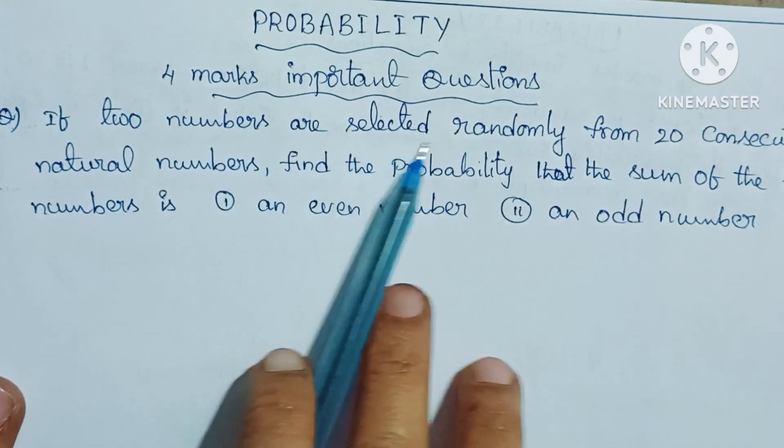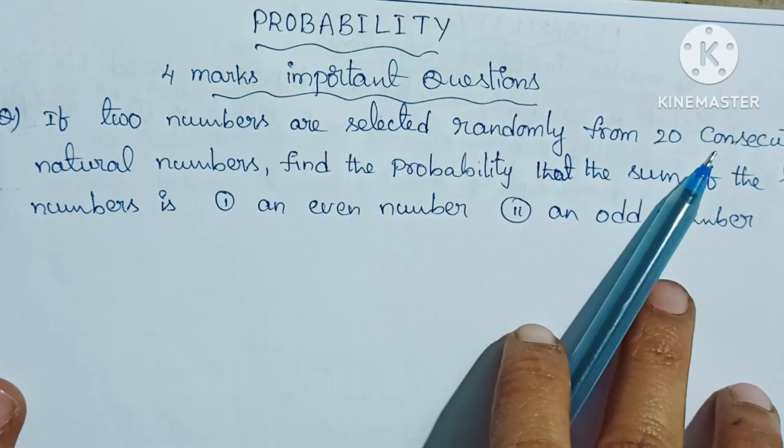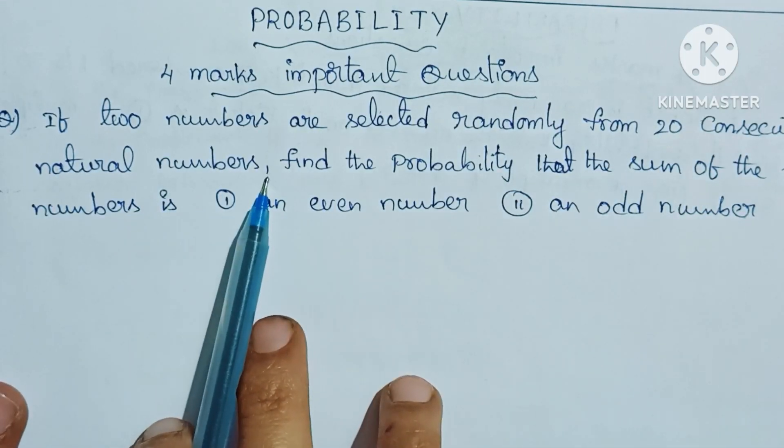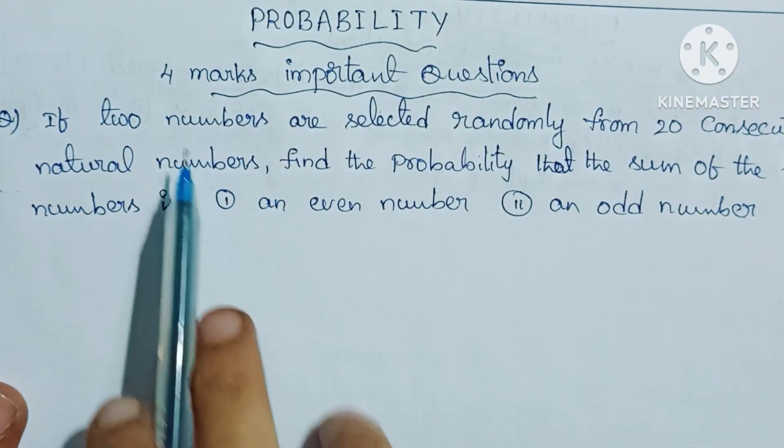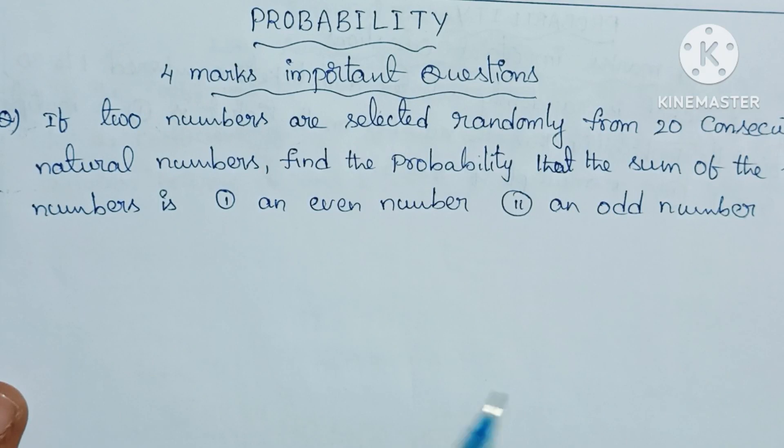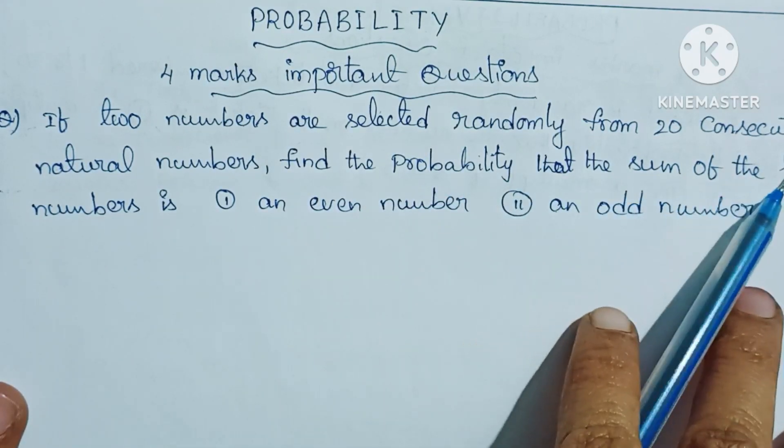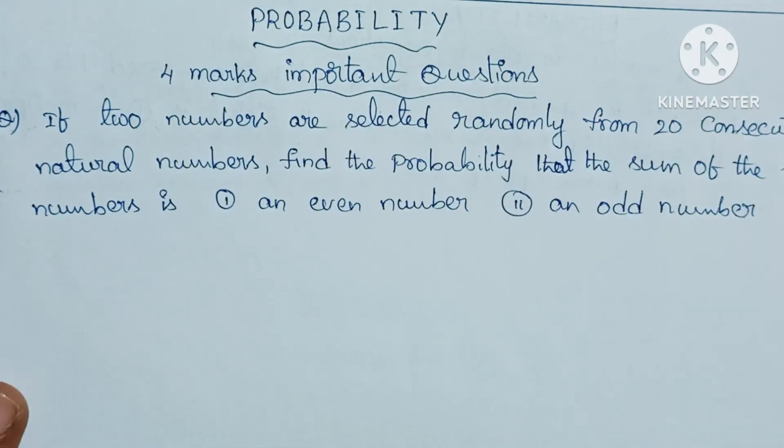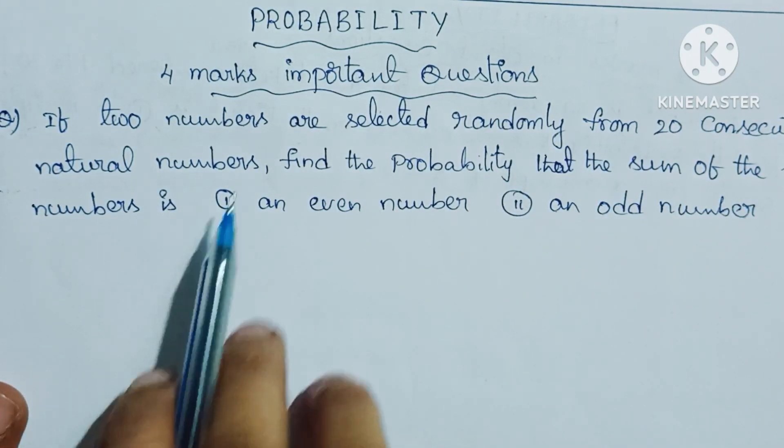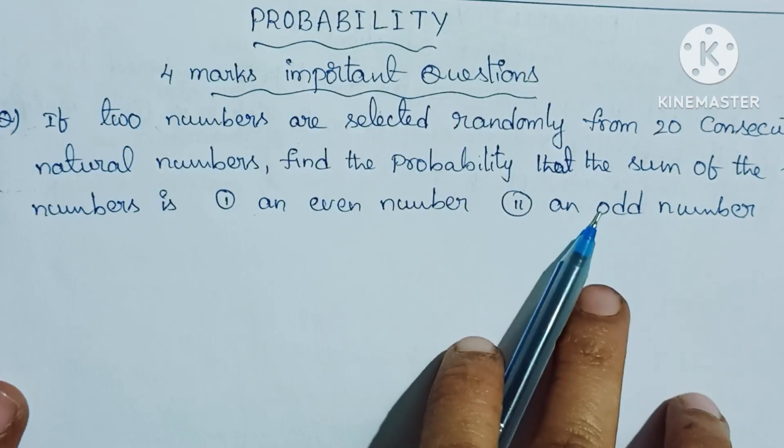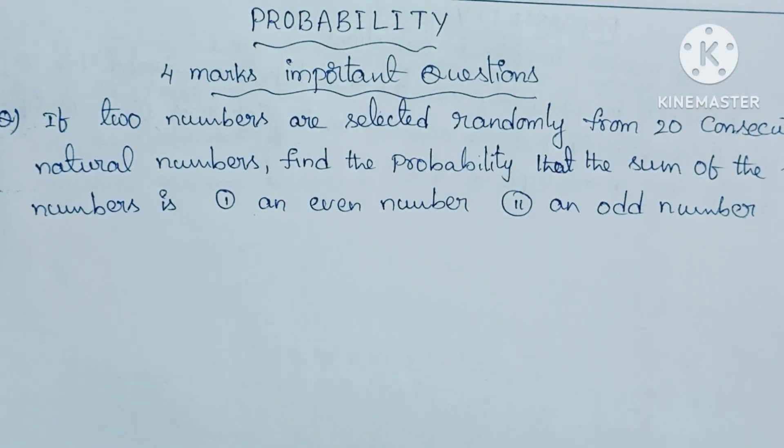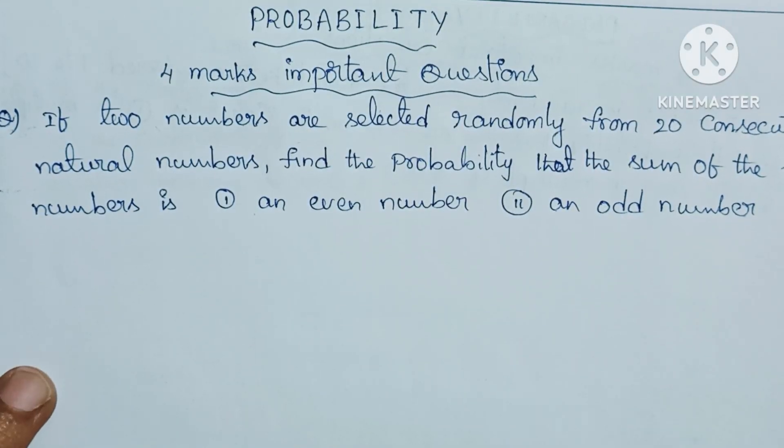If 2 numbers are selected randomly from 20 consecutive natural numbers, find the probability that sum of the 2 numbers is (i) an even number (ii) an odd number.